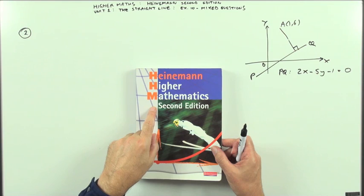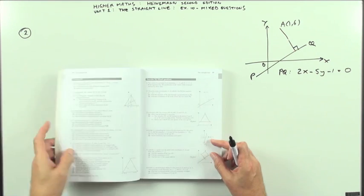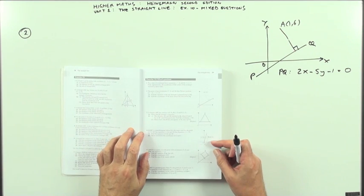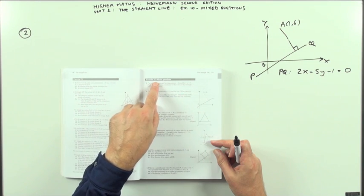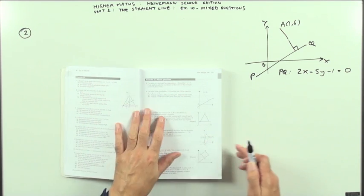So, using the Heinemann Higher Maths book, doing the mixed exercises at the end of each chapter, this is chapter 1 on lines, mixed exercise 1-0, number 2 this time.